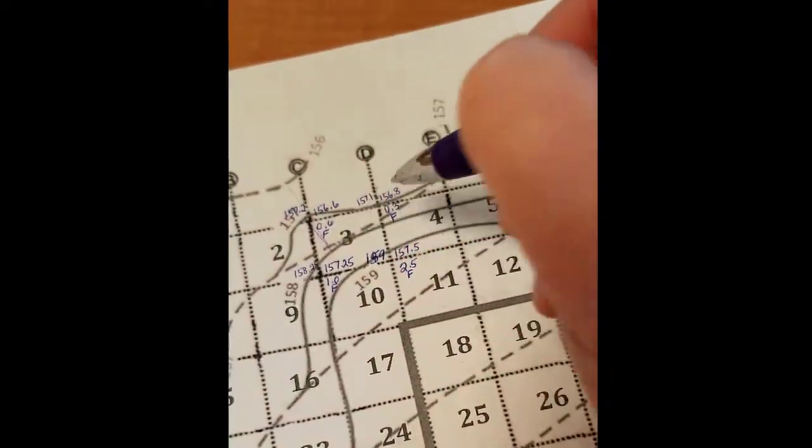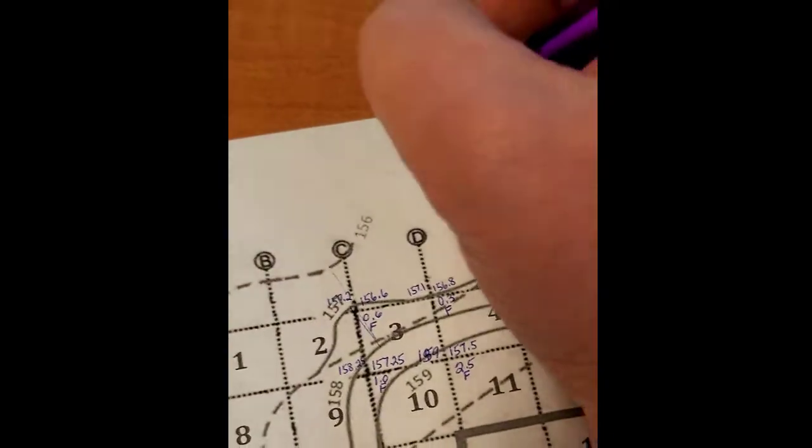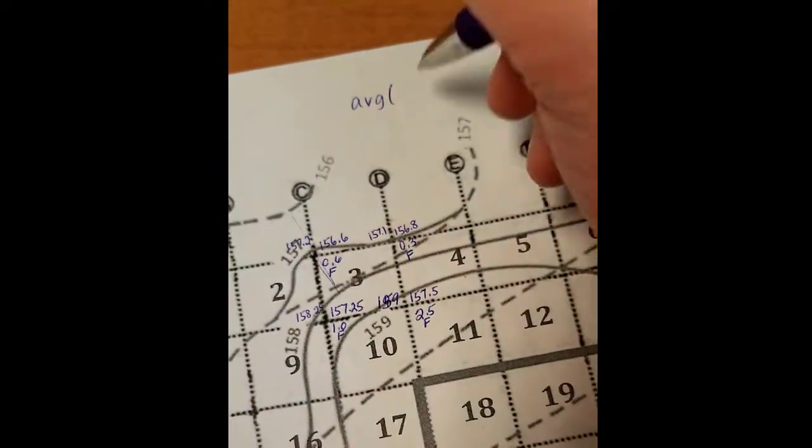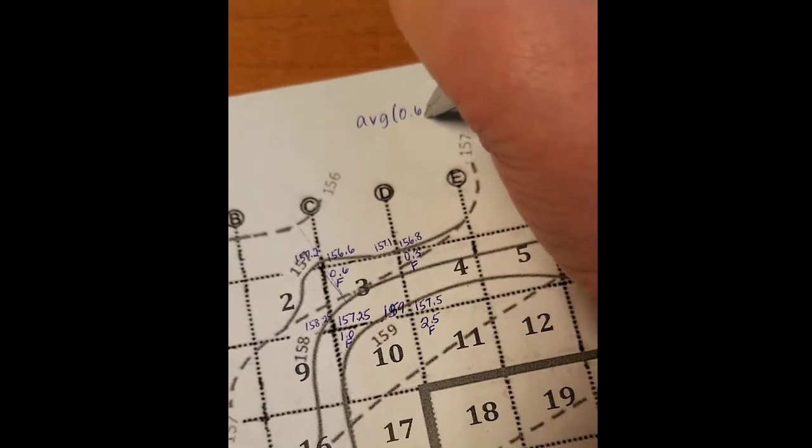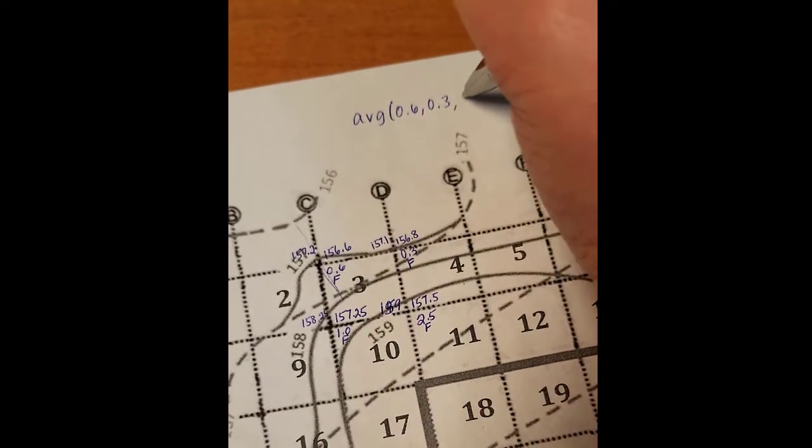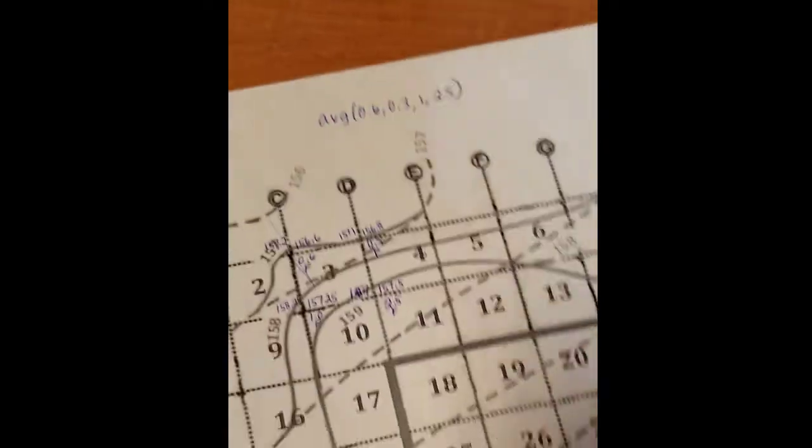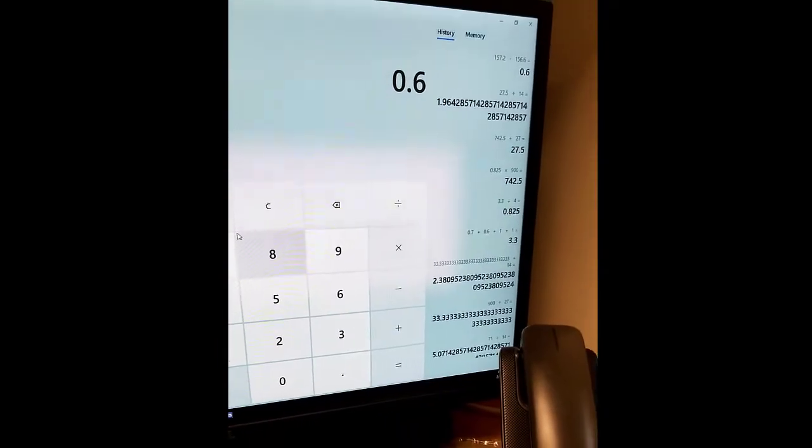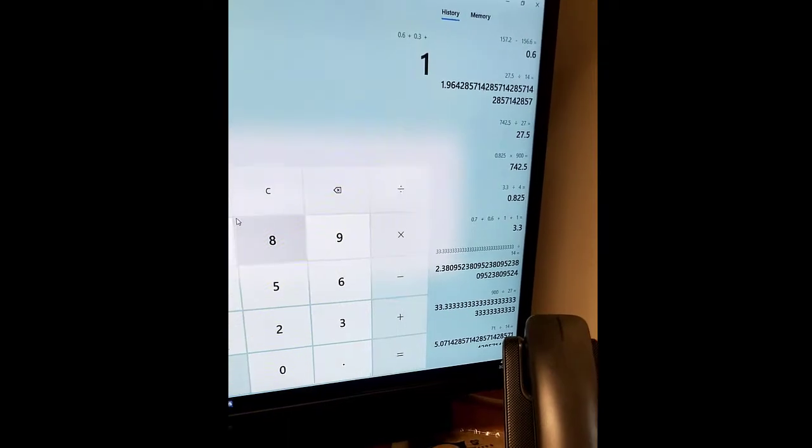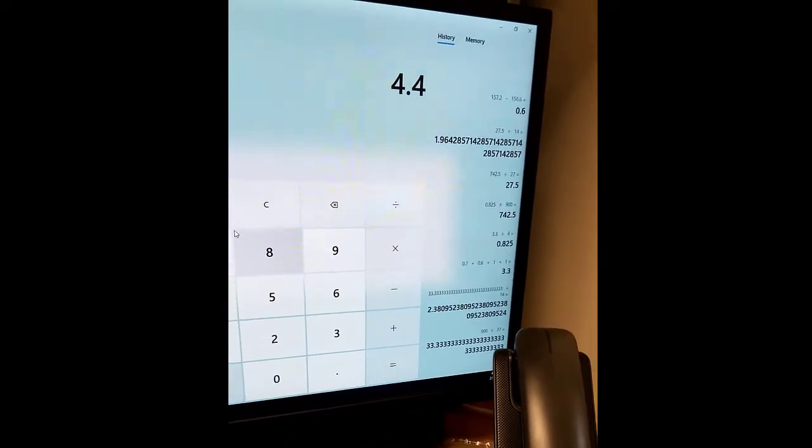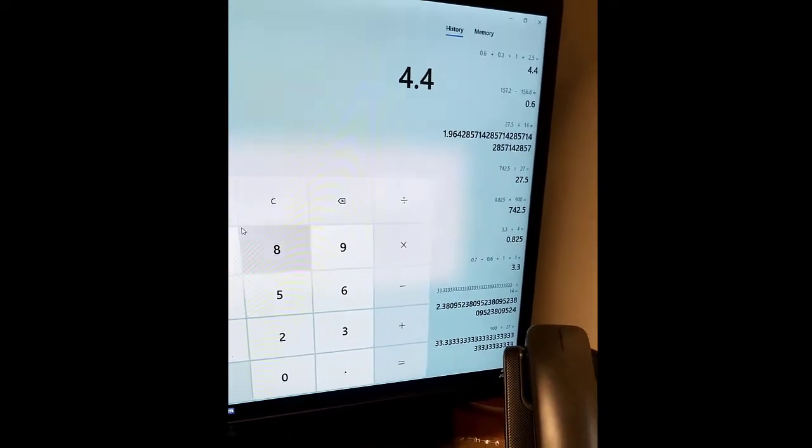And so then what I'm going to do is average these four numbers. You can see they're all different. Sometimes they're all the same. So 0.6 plus 0.3 plus 1 plus 2.5 equals 4.4. I'm going to average them.